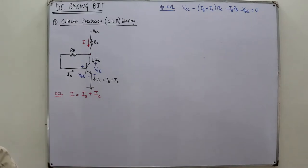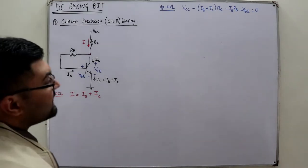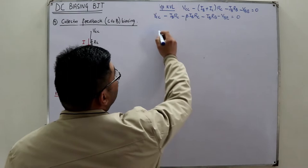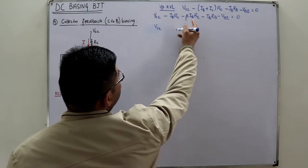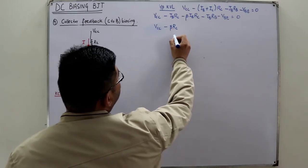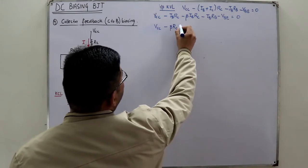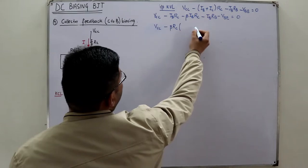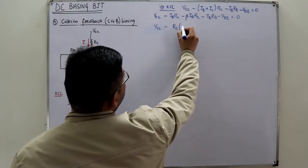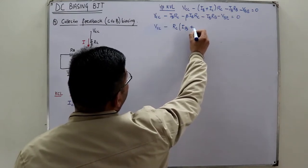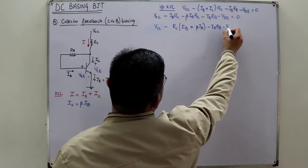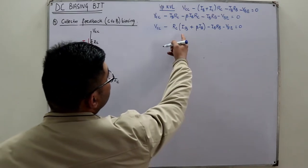Substituting IC = β·IB (valid in the amplification region), the equation becomes: VCC minus (IB + β·IB)·RC minus IB·RB minus VBE = 0. Taking IB common from the RC terms, you get VCC minus RC·(1 + β)·IB minus IB·RB minus VBE = 0.